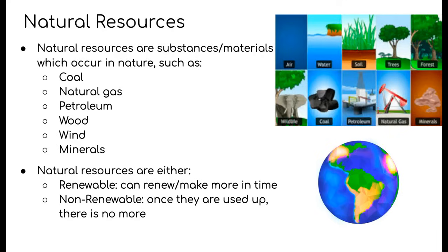Natural resources which occur in nature can fall under one of two categories: either renewable or non-renewable. Renewable resources means that they can renew or create more to replenish what has been used up over time. Non-renewable resources, on the other hand, are resources which have a limited supply, meaning once it's all used up there is no more available.